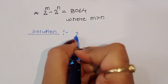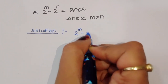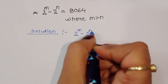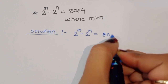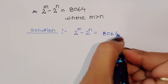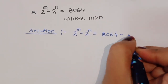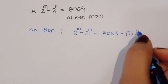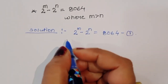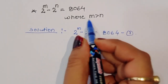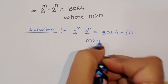First, what is given: 2 power m minus 2 power n is equal to 8064. This is given, so this is equation number 1. Next, the condition given is m is greater than n.